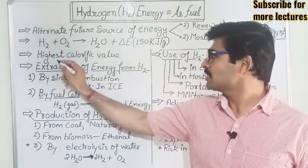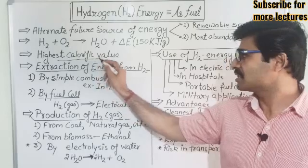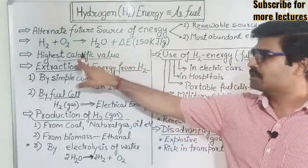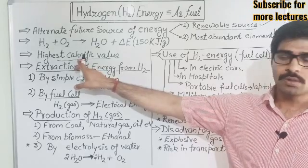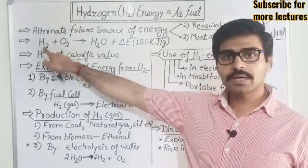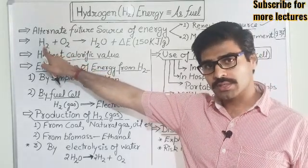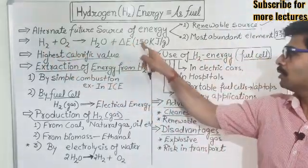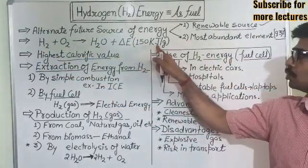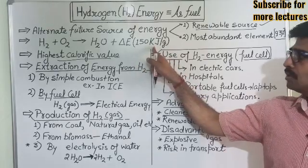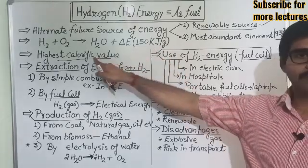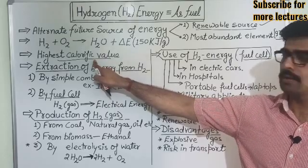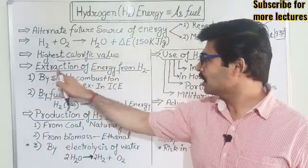The third point is that the calorific value of hydrogen is the highest among different elements. What does highest calorific value mean? If we burn one gram of hydrogen, we will get about 150 kilojoules of energy. Calorific value means the generation of energy per unit mass of the fuel.